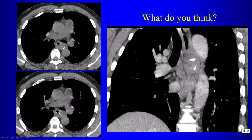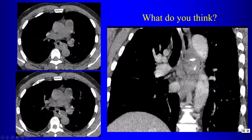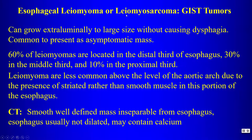Another esophageal mass with calcification: unlike esophageal cancer with circumferential wall thickening, the bulk of this lesion is outside the esophagus, with only slight encroachment on the lumen. This is an esophageal GIST tumor — formerly called leiomyoma or leiomyosarcoma — which can grow extra-luminally to a large size.